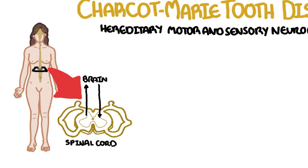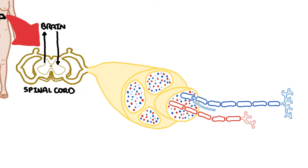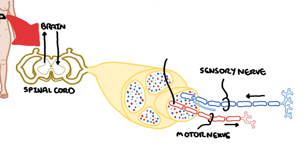Here you can see a peripheral nerve coming out of the spinal cord. The peripheral nerves are made up of sensory and motor neurons. The sensory neurons bring information into the central nervous system, and the motor neurons supply the muscles of our body. Myelin is essentially an insulator that wraps around the neurons to help speed up the signals transmitted through the neurons.